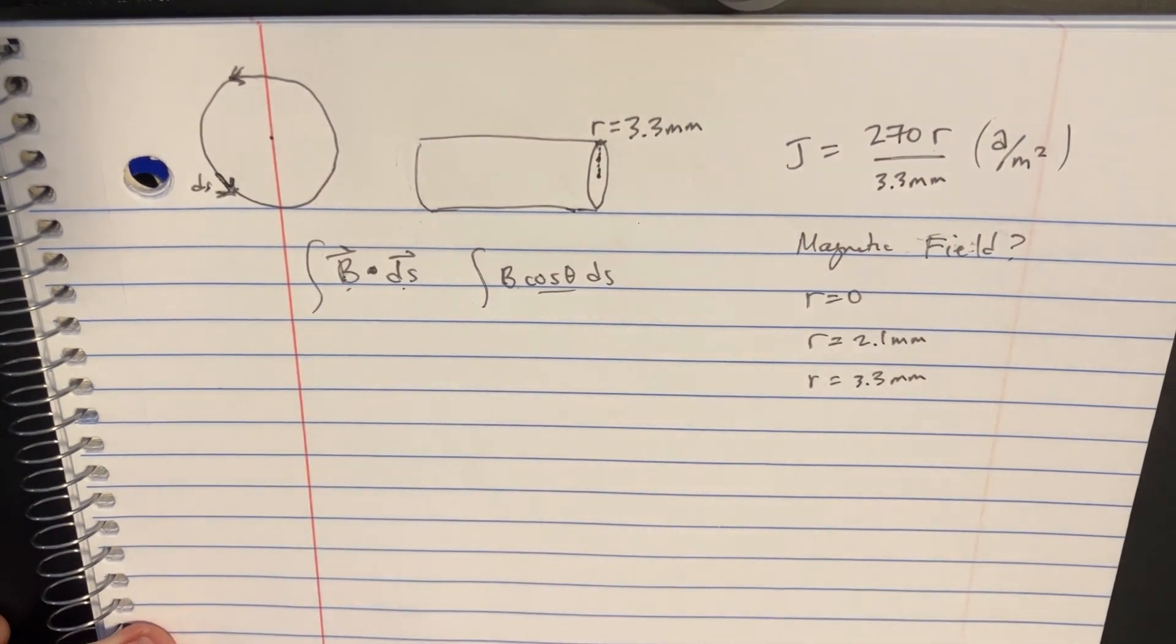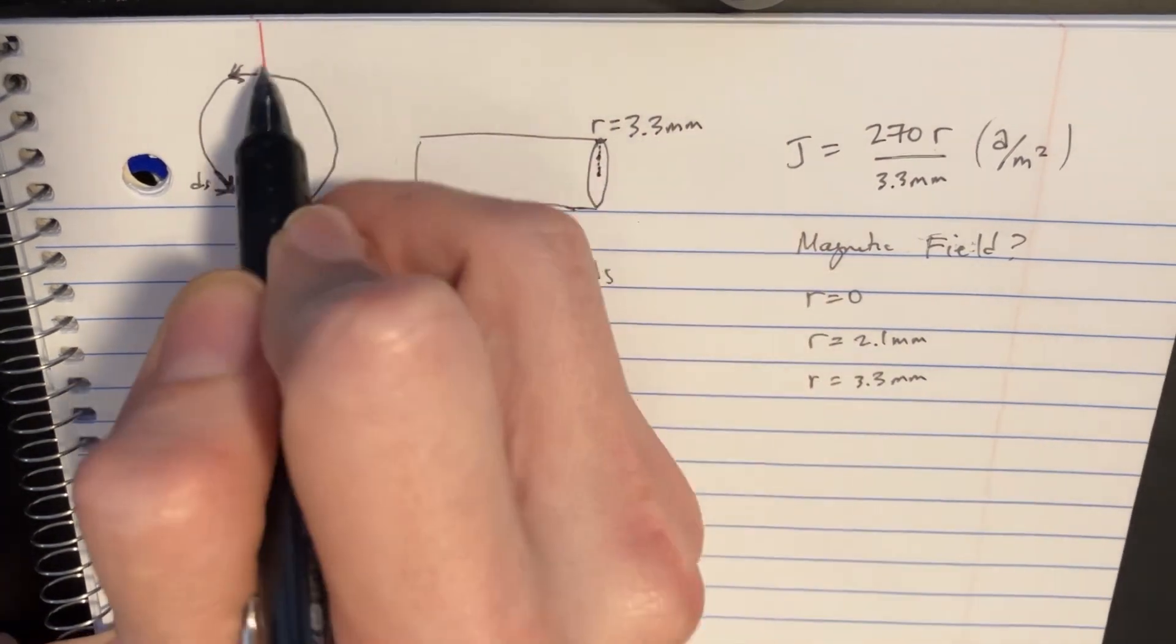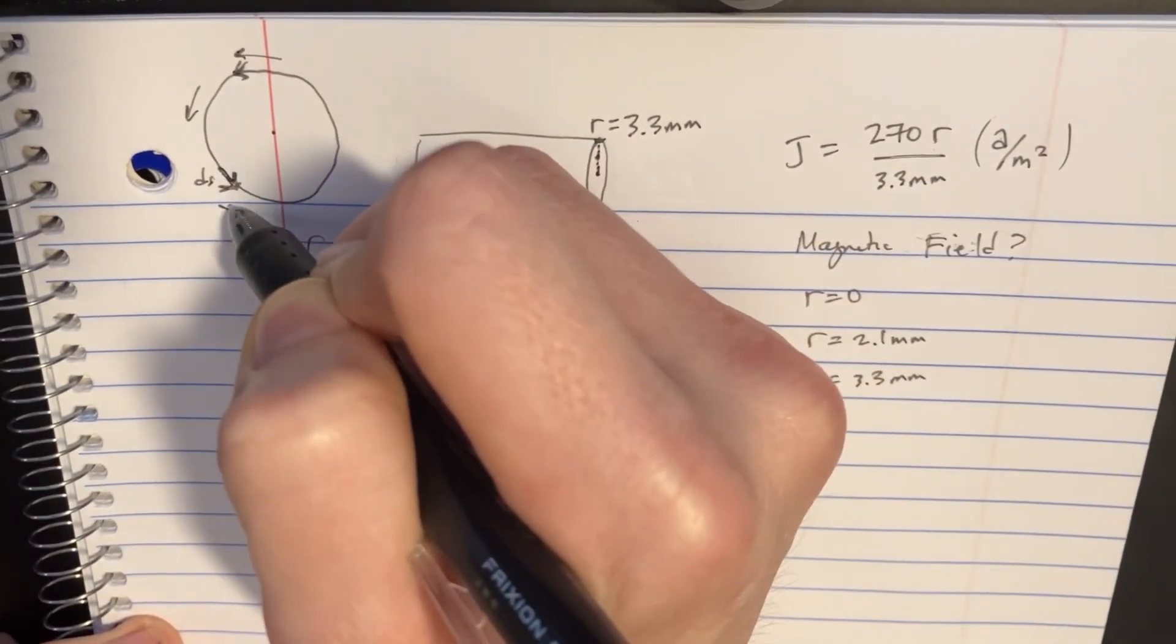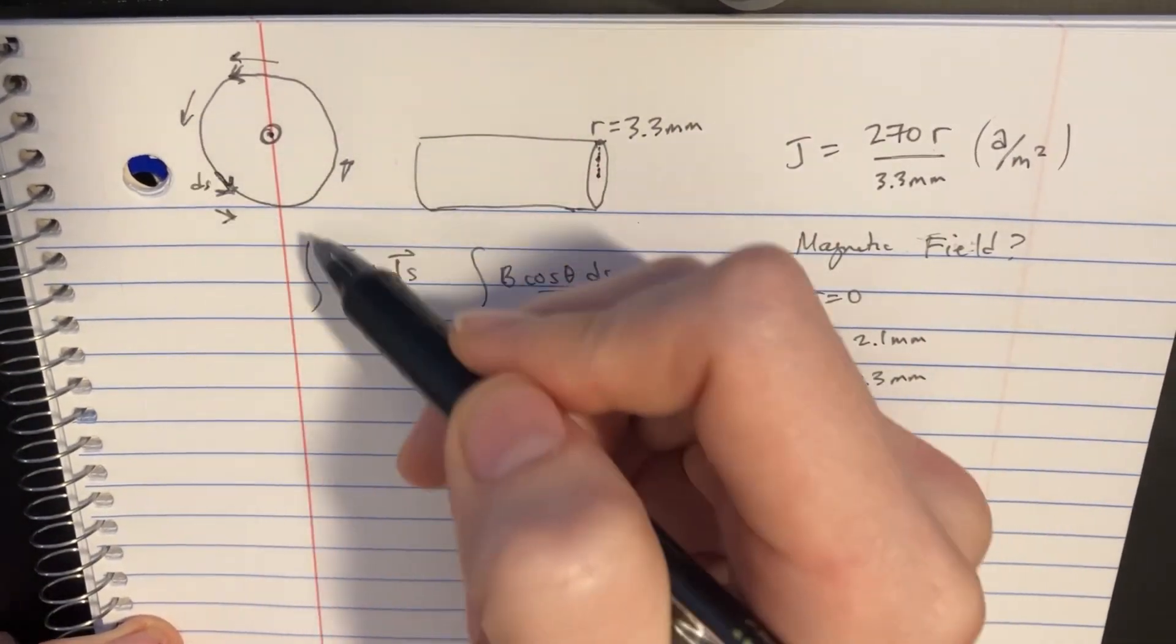And then you want to ask yourself, where is the magnetic field? Well, if the current's shooting this way, I know the magnetic field is going to be going this way. So it's literally going to follow the loop around if the current was coming out of the page like this. Right hand rule.